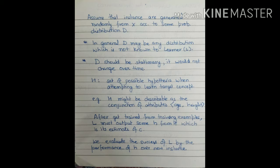H is a set of possible hypotheses. H might be describable by the conjunction of attributes like age and height, and by the conjunction of these attributes we can define our hypothesis. After getting trained from training examples, the learner L must output some hypothesis which is its estimate of C. Whenever the learner is trained by the training examples, it will give us a hypothesis and that hypothesis will generate an output related to our target concept. If there is a large difference between H and C(x), we say its performance is not good; if it is very approximate to zero, the learner has very good performance.